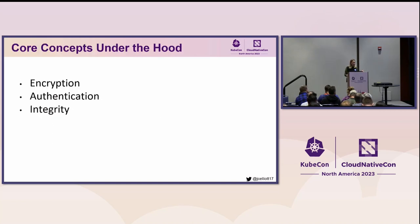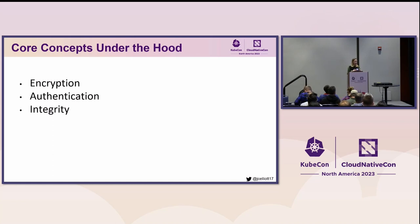Under the hood of a PKI, there are several core components working together to establish secure communication, and these are the ones I'm going to dive into today. Understanding these core components and how they interact will help you understand PKI fundamentals and build your mental model. These fundamental concepts are encryption, authentication, and integrity.